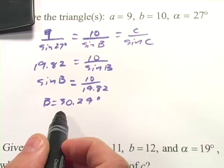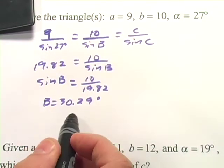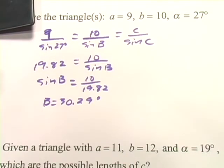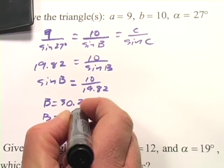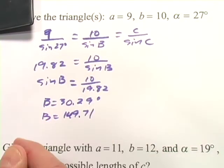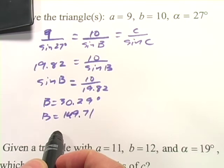But there's another possible value of B here, and what we need to do is subtract that from 180 to get that possible value. And that is going to be 149.71. So there we have our two possible values of B.